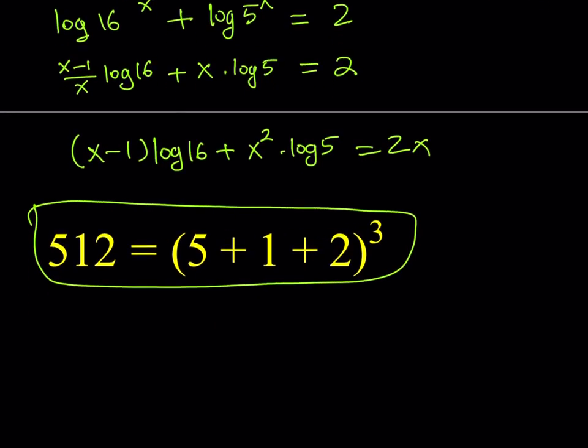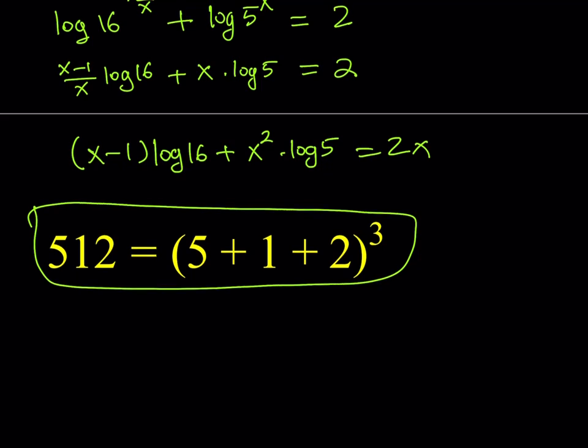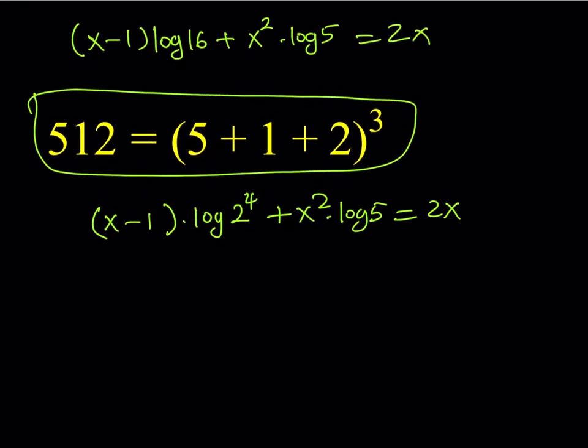But we still have to associate log 16 and log 5. I'm going to write it as log 2 to the 4th power because that's definitely going to help us. And 2 and 5 are kind of related. And remember, our base is 10. Now, this x squared, the 2 power 2, is not going to be moved because it's already a polynomial. We only do it for logs. But this 4 can definitely be moved because that's the exponent of a log something. That's going to be 4x minus 4 multiplied by log 2 plus x squared times log 5, is equal to 2x.